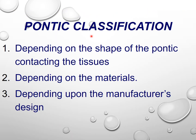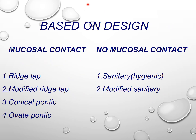Coming to pontic classification — it can be classified according to three different methods: depending on the shape of the pontic contacting the tissue, depending on the materials, and depending upon the manufacturer's design. Based on design, it can be mucosal contact or no mucosal contact. In the mucosal contact category there is ridge lap, modified ridge lap, conical pontic, and ovate pontic. In the no mucosal contact category there is the sanitary or hygienic, and modified sanitary.